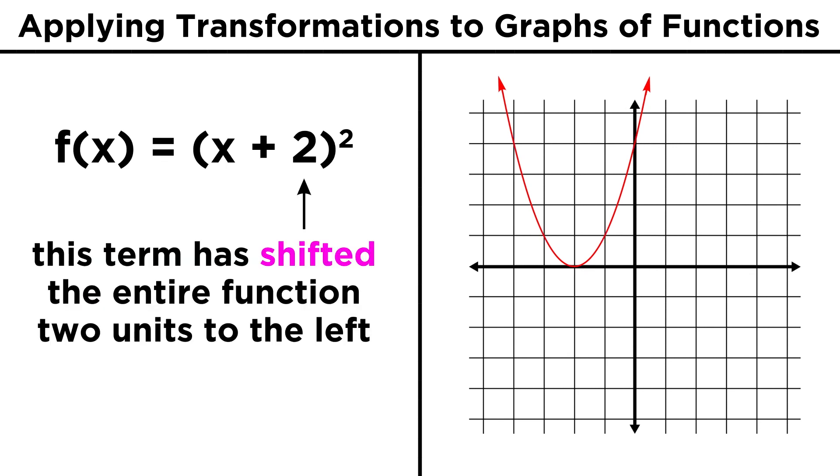We can see that it's the same as x squared, but it has undergone a horizontal shift of two to the left, with the vertex now at negative two, zero, rather than the origin.